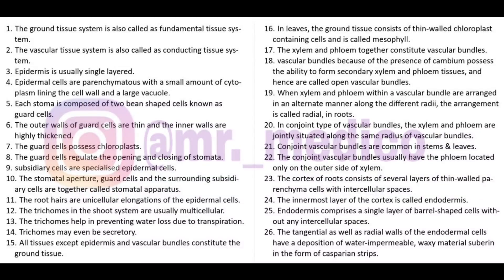NCRT Biology - Anatomy of Flowering Plants: The ground tissue system is also called the fundamental tissue system. The vascular tissue system's other name is the conducting tissue system. Epidermis is generally single-layered.